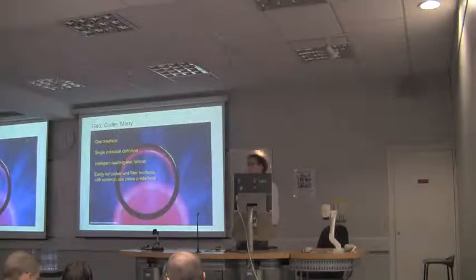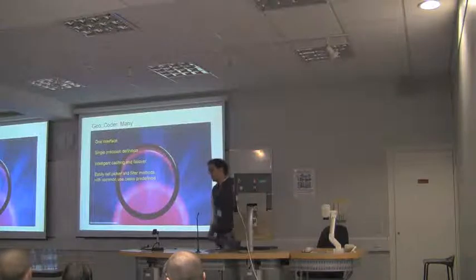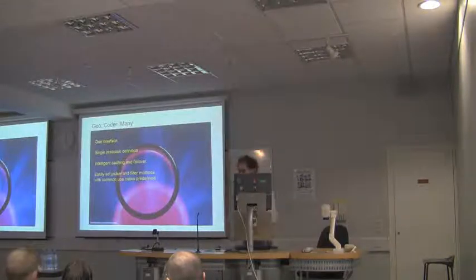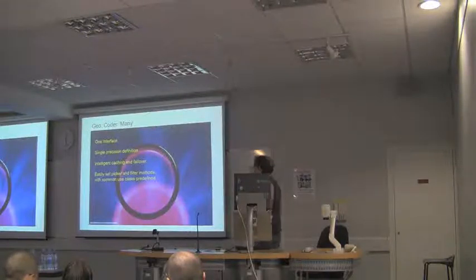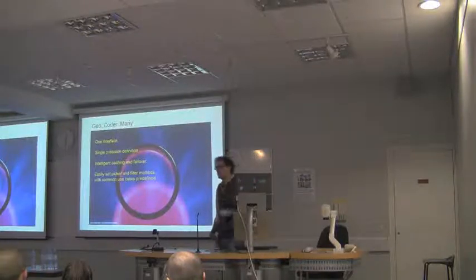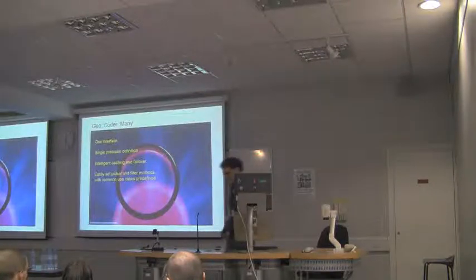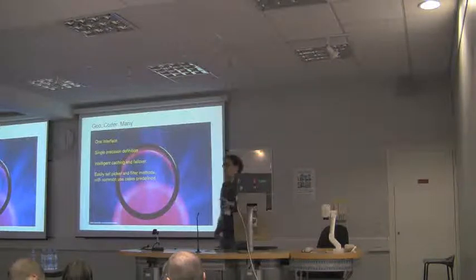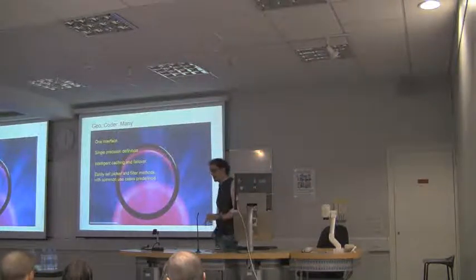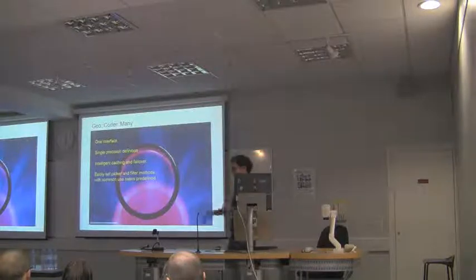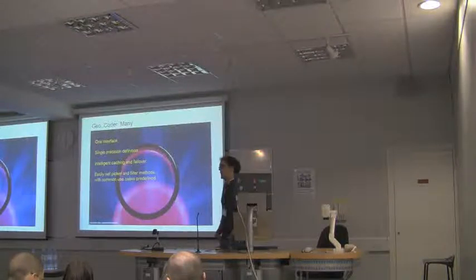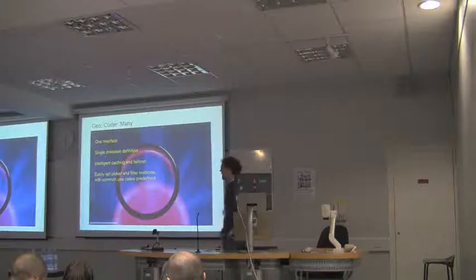So we wrote Geocoder::Many, which attempts to bridge across these different modules. What we attempt to do with Geocoder::Many is to have a single interface across all the providers, a single definition of precision so that if I get back an answer with a precision of X, I know what that means regardless of the different providers. It also provides tools like easy-to-use caching and failover across different providers.